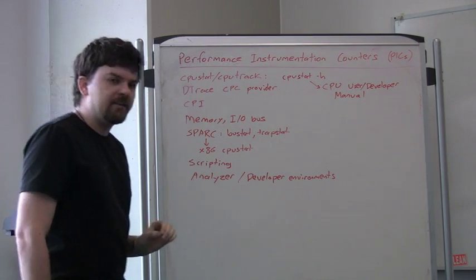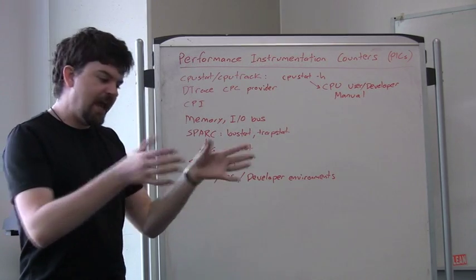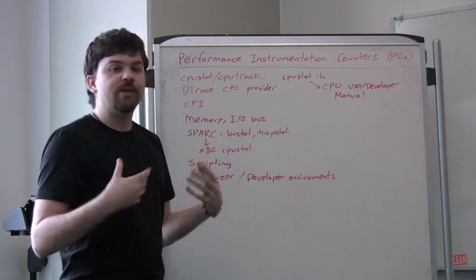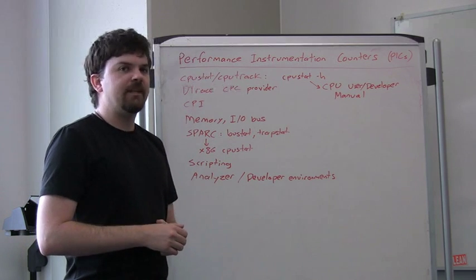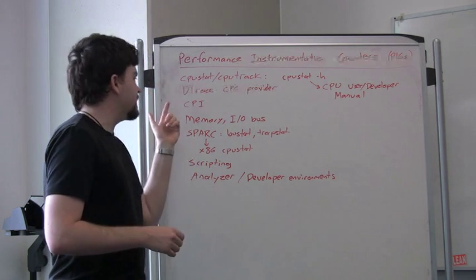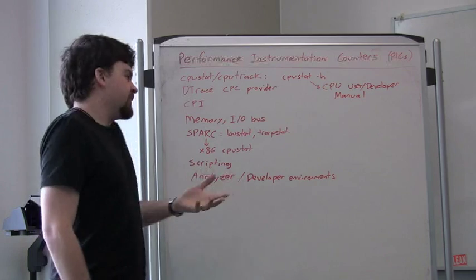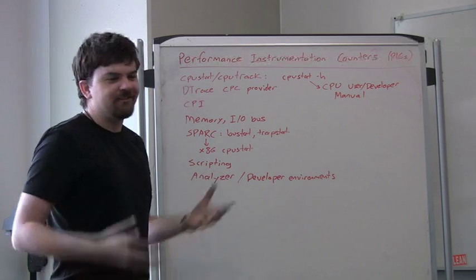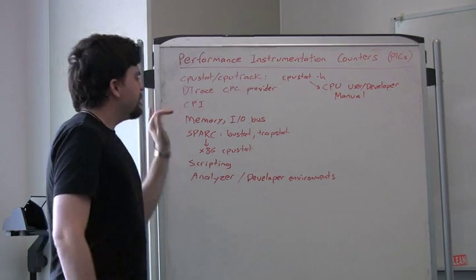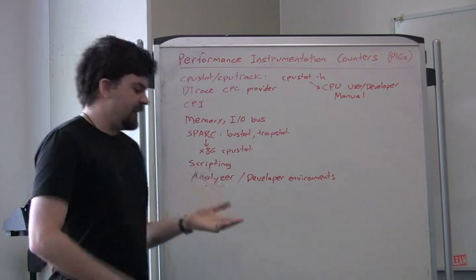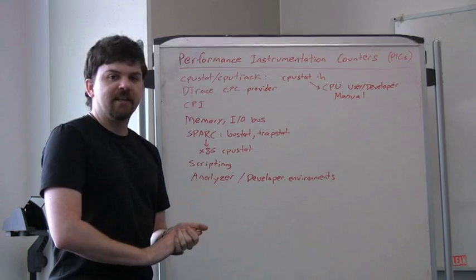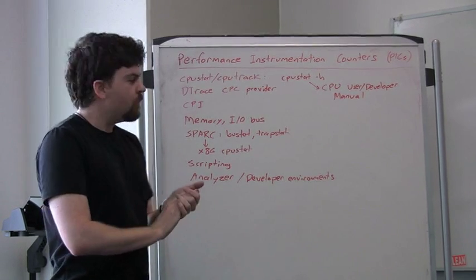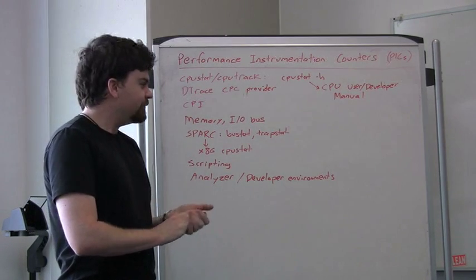To get started, so you're interested, you have CPU pressure, you're interested in understanding more about it - the very first metric I would get people to look at is the cycles per instruction. Sometimes people write this as instructions per cycle, doesn't really matter. Cycles per instruction - what that is, is how many CPU cycles does it take on average to execute an instruction?